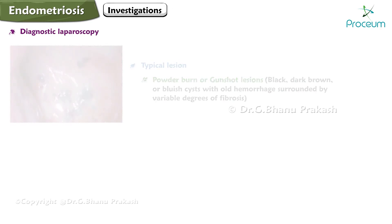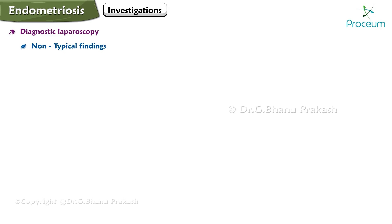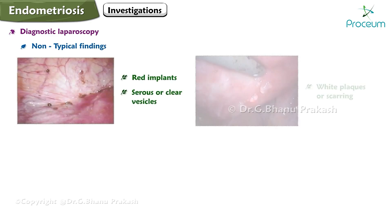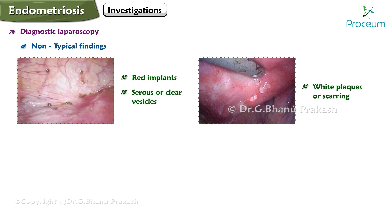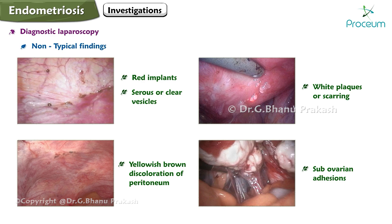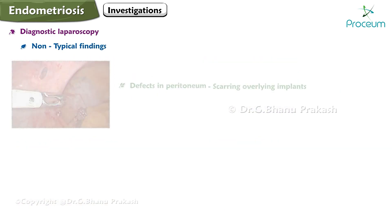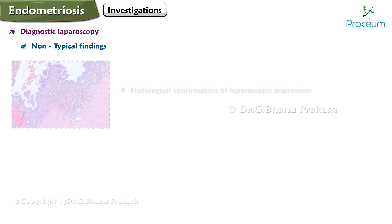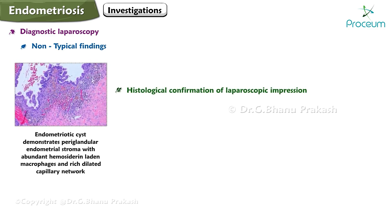Non-typical laparoscopic findings include red implants, serous or clear vesicles, white plaques or scarring, yellowish-brown discoloration of peritoneum, and sub-ovarian adhesions. Defects in the peritoneum with scarring overlying implants is called Allen-Masters syndrome. Histological confirmation of laparoscopic findings is essential for a definitive diagnosis of endometriosis.